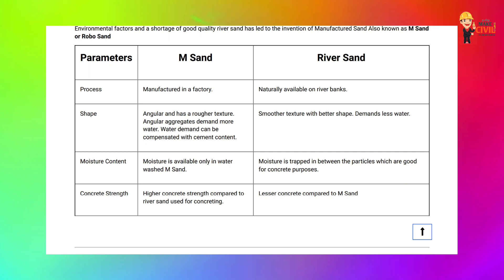M-Sand undergoes a water wash process during manufacturing. Similarly, river sand also goes through natural water washing. However, the silt content in river sand is very low compared to M-Sand.